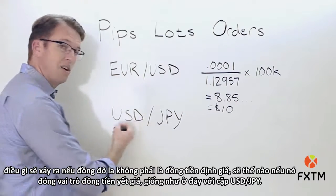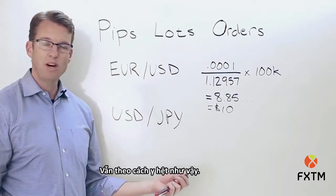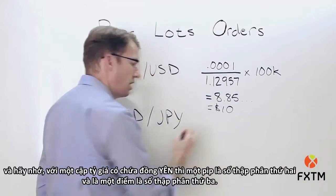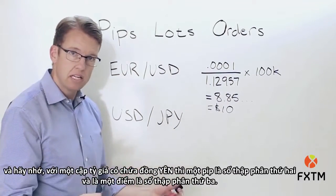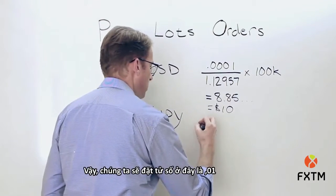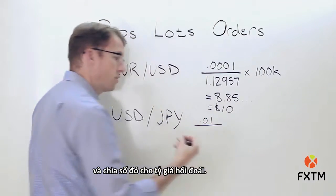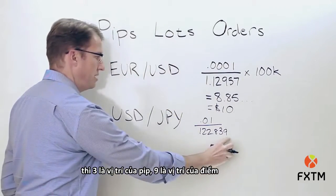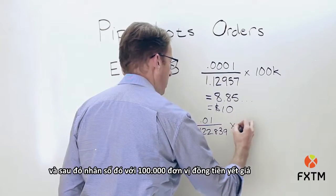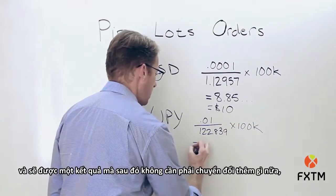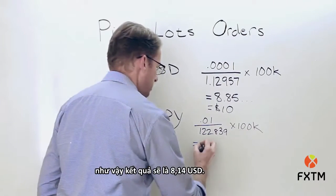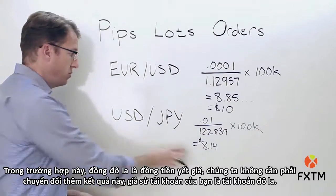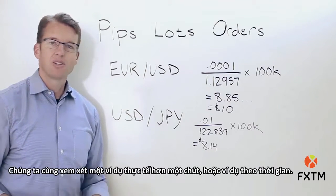What if the dollar is on the base side, as it is with the dollar/yen pair? We use the exact same formula, but slightly adjusted. For a yen pair, the pip is the second decimal place and the point is the third decimal place, so we put 0.01 in the numerator and divide by the current exchange rate — let's say 1.22839. Multiplying by 100,000 units gives us a result of eight dollars and fourteen cents, and because the dollar is on the base side we don't need to convert further if your account is dollar-denominated.